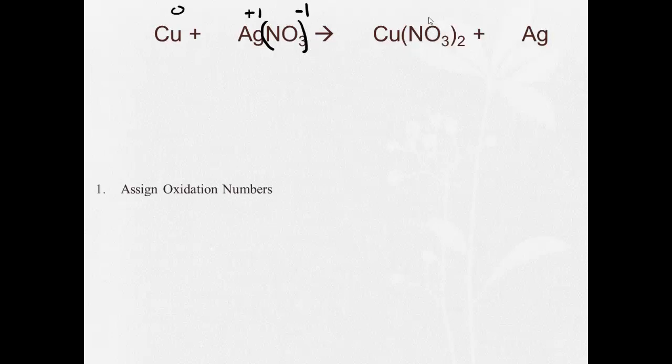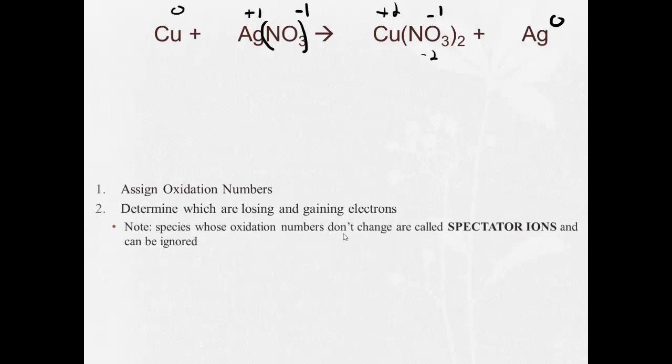Now on this side, nitrate was minus one, but there's two of them for a total of minus two. So that means the copper has to be plus two. Plus two, minus two equals zero. Everything balances. And silver is zero. Next, I have to determine which are losing and which are gaining electrons. And it's important to note, species whose oxidation numbers don't change are called spectator ions and they can be ignored. So we can see here that the nitrate was minus one and it stayed minus one. We can ignore this now. So we can see copper is becoming Cu2+, so it's losing electrons. We can see silver is going from a plus one to neutral, so it's gaining an electron.